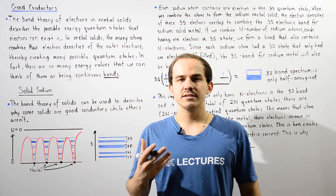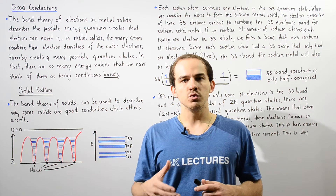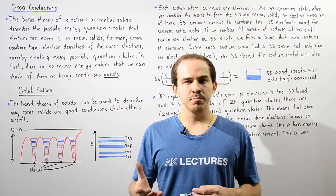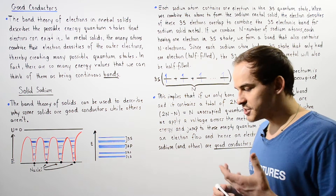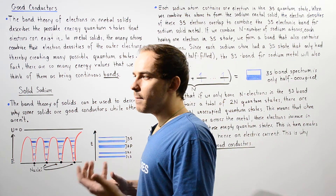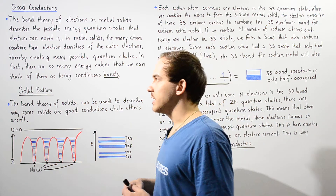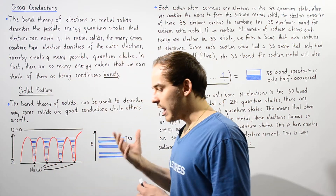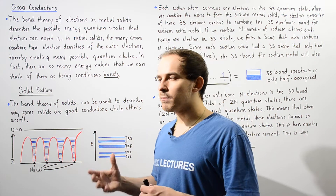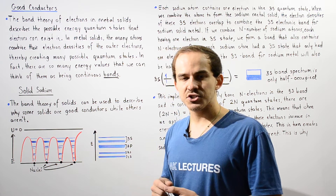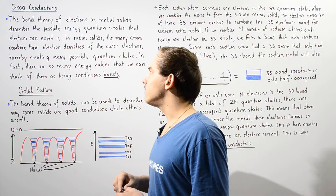Previously we discussed the band theory of solids. Now we're going to use this theory to help us explain why certain solids are good conductors of electricity. The electronic band theory, or band theory of electrons of metal solids, basically describes the possible energy quantum states that an electron inside that metal solid can be found in.